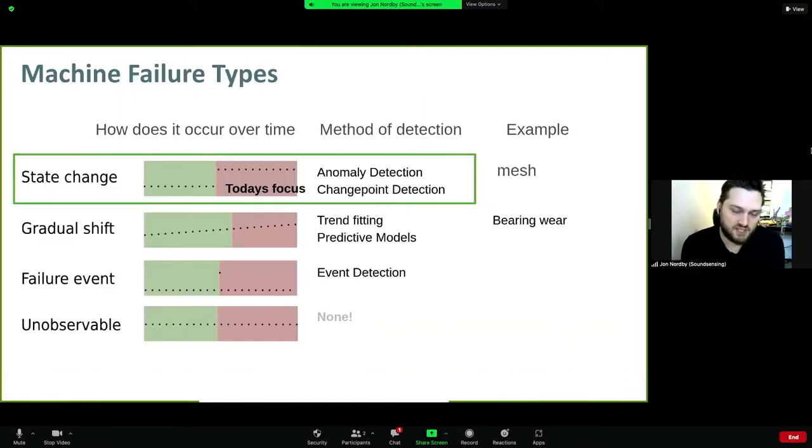Machines fail in many ways. You can have failures that are, at least with a given sensor modality, unobservable. You can have failure events where there's a sound or a change in temperature that only occurs at a specific moment and then the problem is unobservable after that. This could be like a spark, for example. Those are tricky to detect because they're rare, very rare.